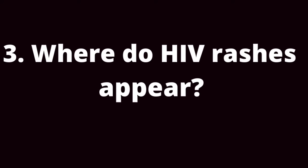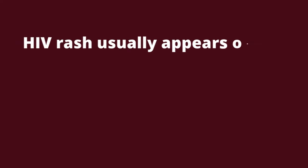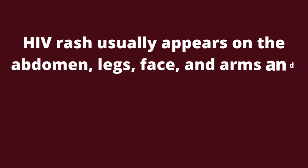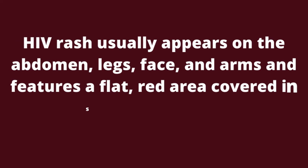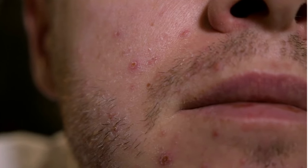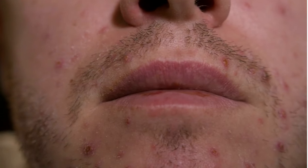Where do HIV rashes appear? HIV rash usually appears on the abdomen, legs, face, and arms, and features a flat, red area covered in small red bumps. Generally, every part of your body is capable of having a skin rash, so this rash will usually appear differently in different people.